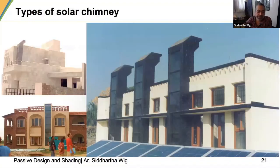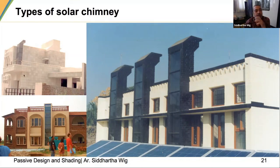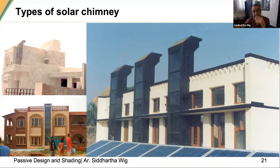We have used solar chimneys in a lot of our projects. The top-left image shows one of our first projects — a residence in Panchkula in 1997. The solar chimney was a very initial attempt, made out of a single layer of black stone. The idea was that it would get hot, hot air would rise, and it was used to evacuate hot air from two rooms on the ground floor and one room on the first floor. It was partly successful.